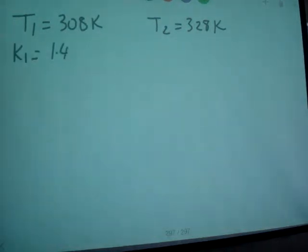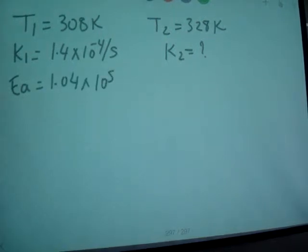Now we are going to start with how to calculate K2 value. Now let's see, what is given? T1 is given 308 Kelvin. T2, 328 Kelvin. K1 is given 1.4 times 10 raised to minus 4 per second. K2, we need to find activation energy, Ea, 1.04 times 10 raised to 5 joule per mole.